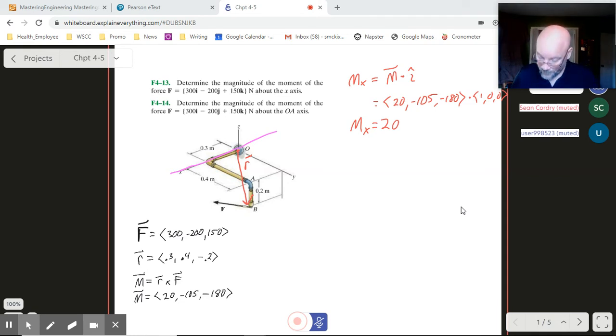Now number 14 is something similar, except that they say the OA axis. So let me draw. Let me get rid of, got rid of more than I wanted to, but that's okay. We're going to put back our moment arm. Nope. Not yet. I don't want to do that yet. Our axis of interest is this guy right here, OA. And remember, what we need is we need our moment arm to start somewhere on that axis of interest.